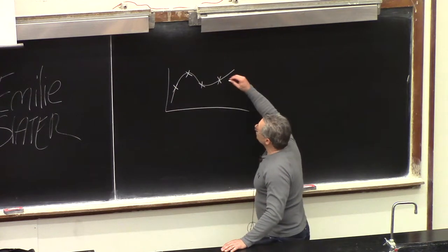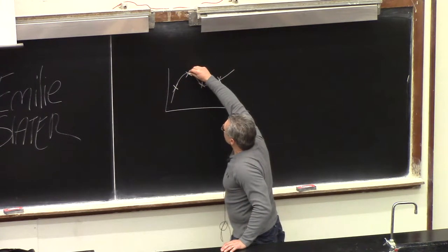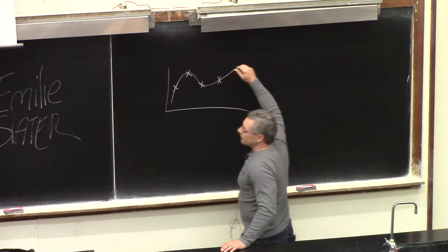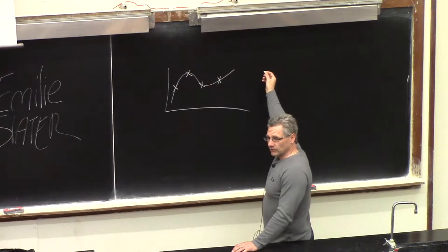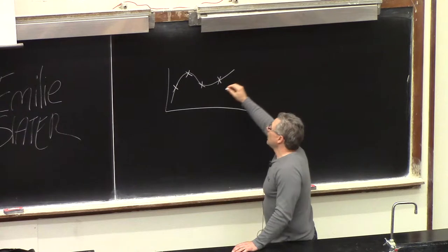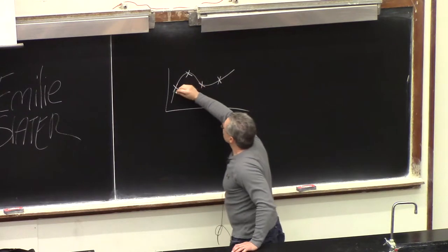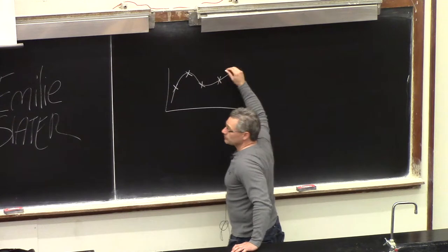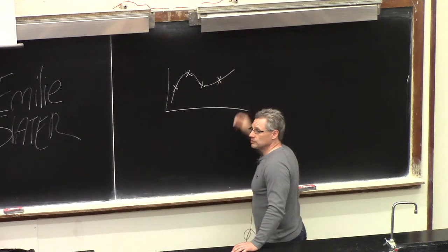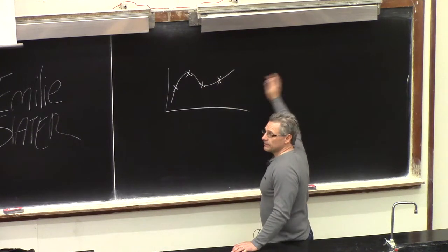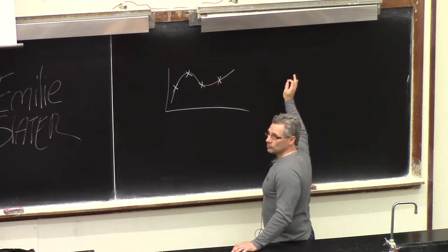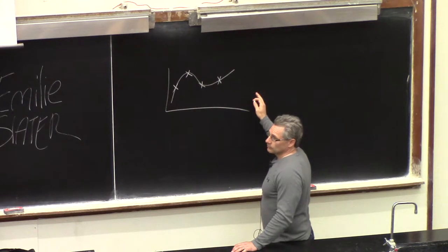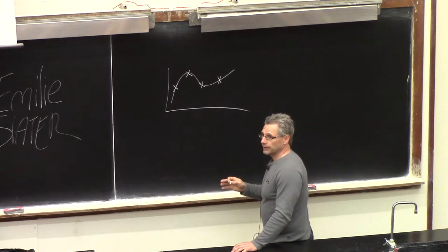The theorem says: if you want to interpolate two points, a line is enough. A line goes through two points. If you want a function through three points, you need a quadratic. If you want a function through four points, you need a cubic. This goes on ad infinitum — you can interpolate a hundred points with a polynomial that's ninety-ninth order. It's guaranteed.